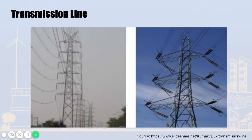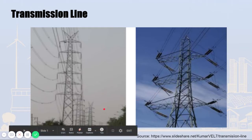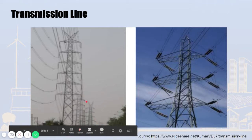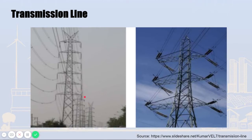There are two types of tower: suspension type and tension type. The left picture is suspension type and the right picture is tension type. Do you know the difference between them? If towers are standing in a straight line, which means the angle among towers is small, we use suspension types.